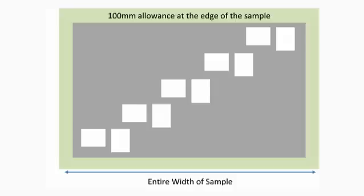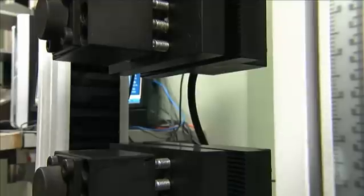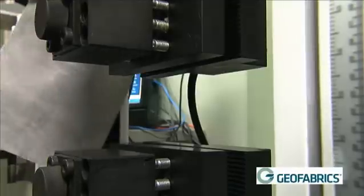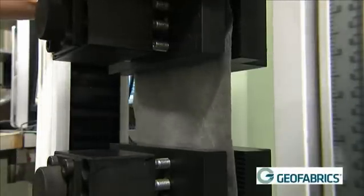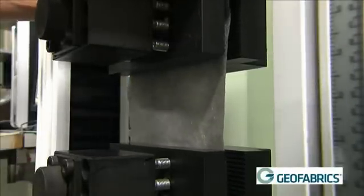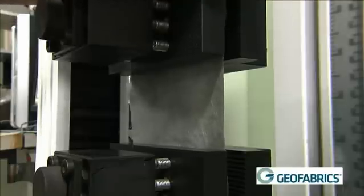100 millimetres from either edge, any visually non-representative, soiled or damaged part of the sample is discarded. The length of the specimen is required to be sufficient for the specimens to extend at least 20 millimetres on the outside of the jaws.